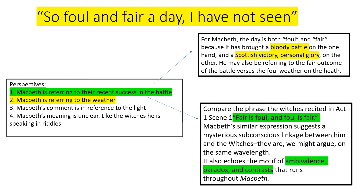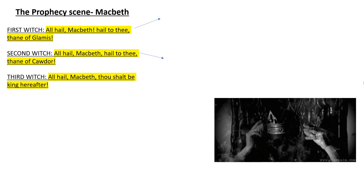This echoes the motif of ambivalence, paradox, and contrast which runs throughout Macbeth. The witches say 'fair is foul, foul is fair,' and then Macbeth says 'so foul and fair a day I have not seen' — paradoxically contrasting what they have said.